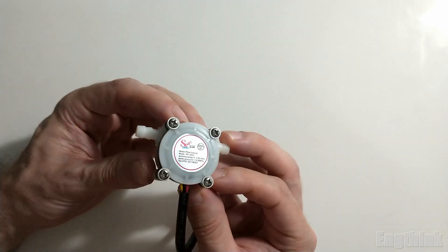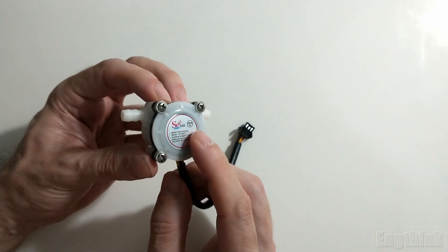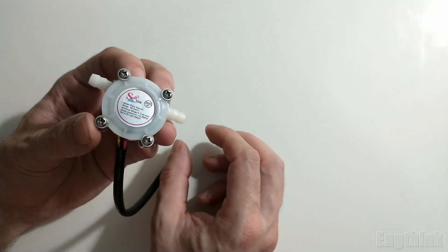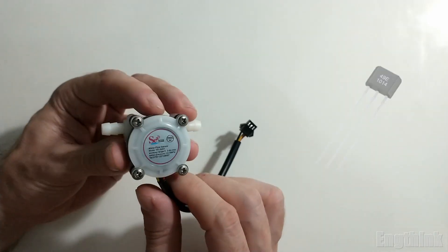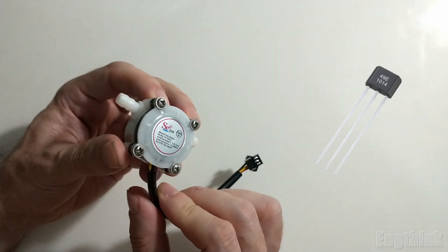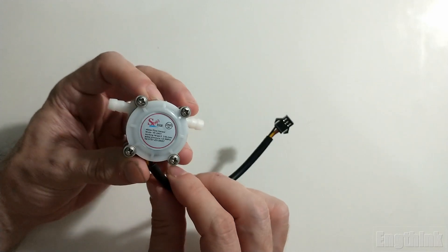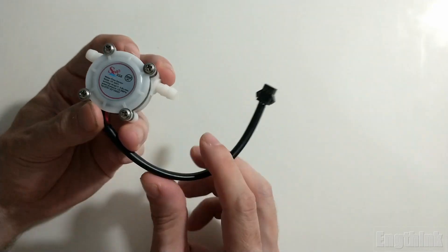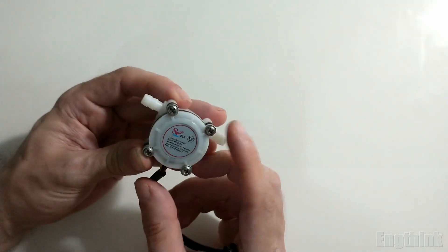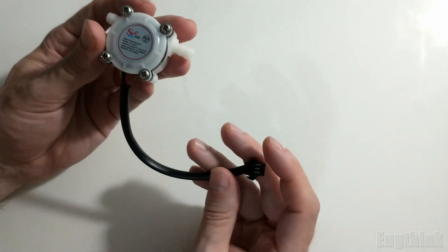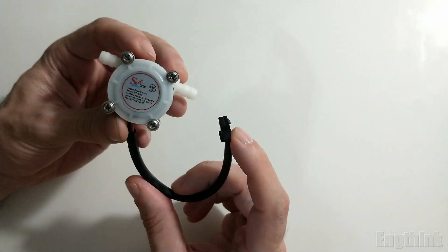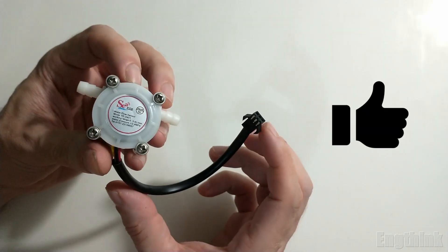Inside this flow sensor, there is a small electronic component that is a Hall effect sensor. I have other videos about this kind of sensor. Basically, the Hall effect sensor is present in a lot of devices. If you like this sort of content, please consider subscribing to support the channel.